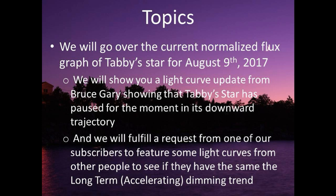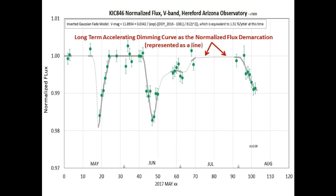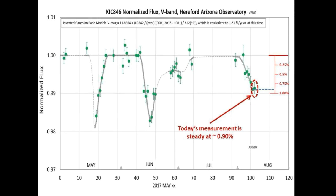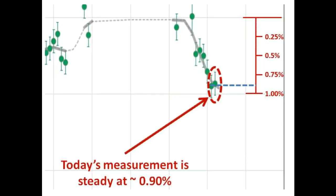Here is Bruce Gary's normalized light curve in the v-band, with the nominal flux level tracking the long-term accelerating dimming curve. Just when we said it looked like we were headed steeply downwards, the star decided to take a pause. So for the moment we are at approximately 0.9% below the nominal flux level, and the curve has rounded slightly to a shallower slope.